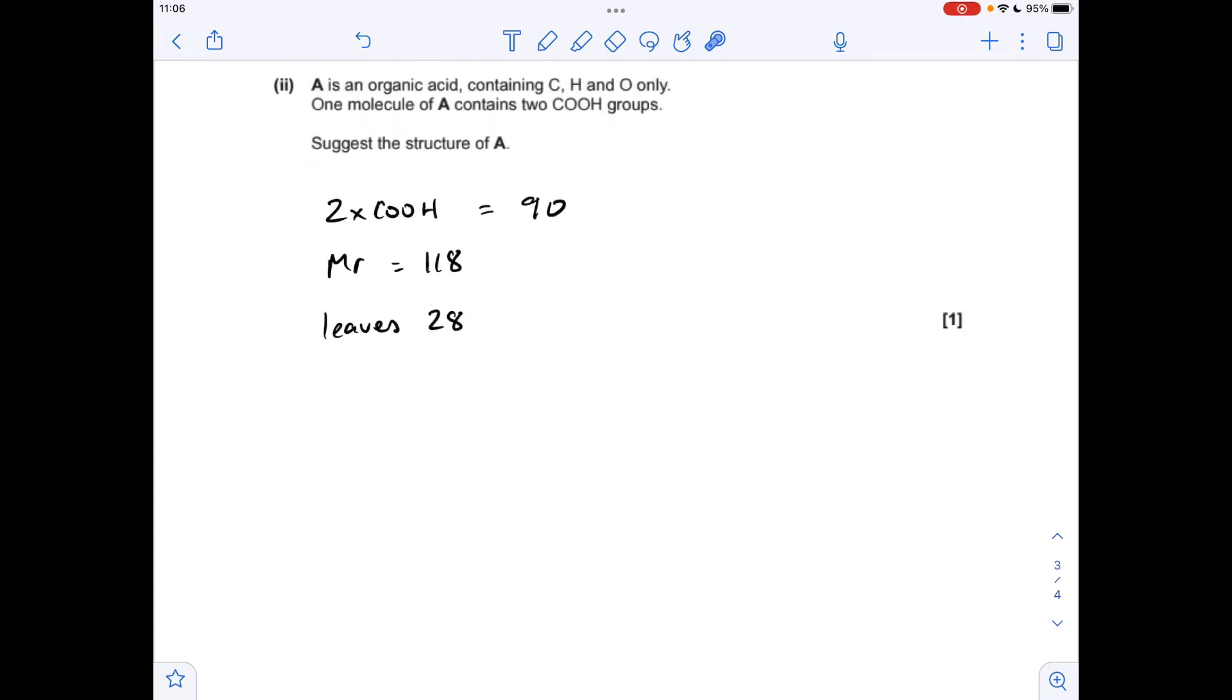So moving on to the structure now, we're told there's two COH groups in A, so that adds up to an MR of 90. We've just worked out the MR of A is 118, so the difference between those two is 28. So that's going to be some carbon and hydrogen between those two COH groups.